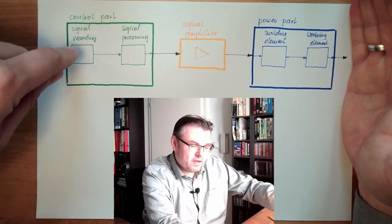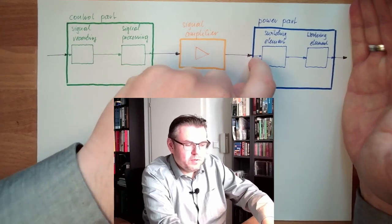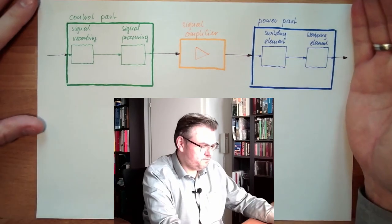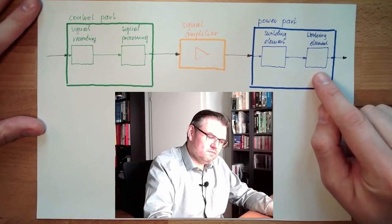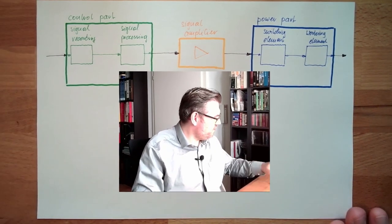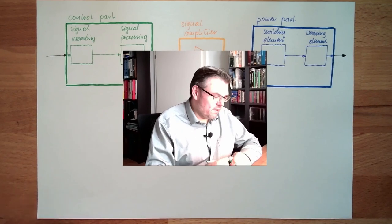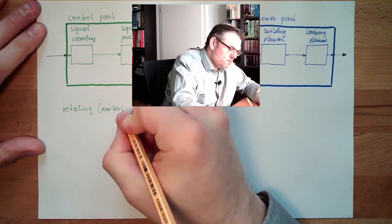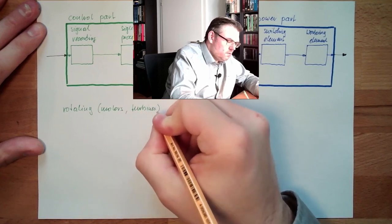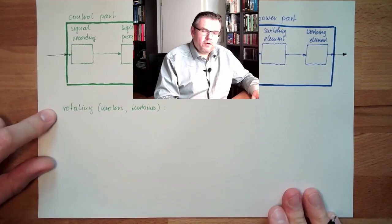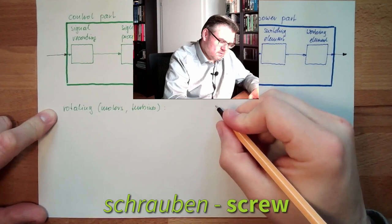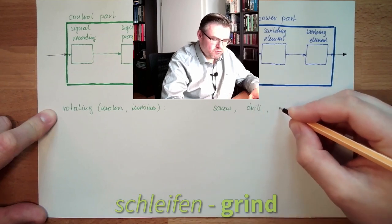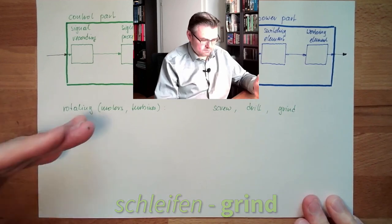When we use these things in pneumatics, it's a pneumatic control system: signal recording — mechanical or pneumatic; signal processing — mechanical or pneumatic; switching elements — usually valves; working elements — cylinders, turbines, or pneumatic motors. We have different working elements. There are rotating working elements — motors and turbines — which can be used to screw, drill, and grind things.